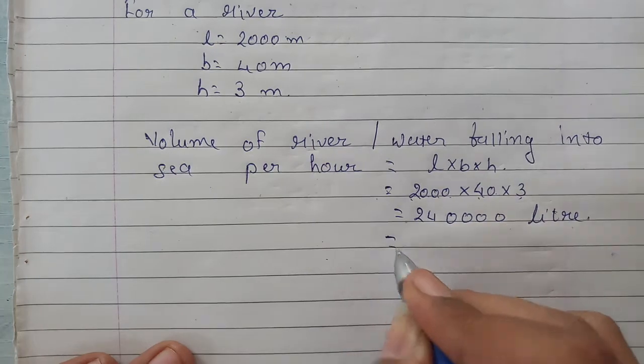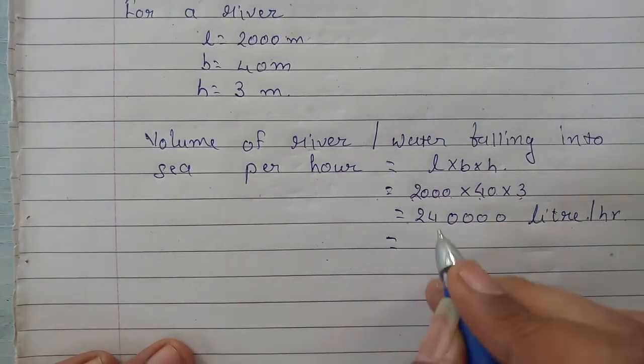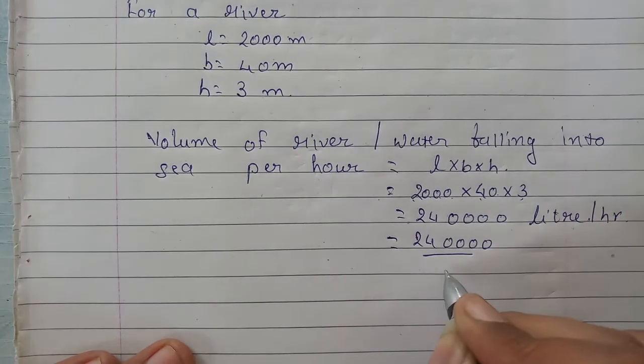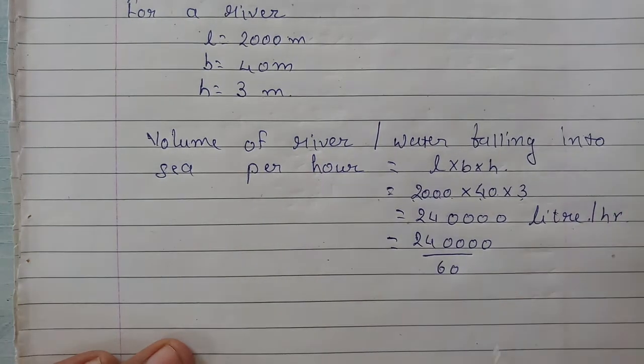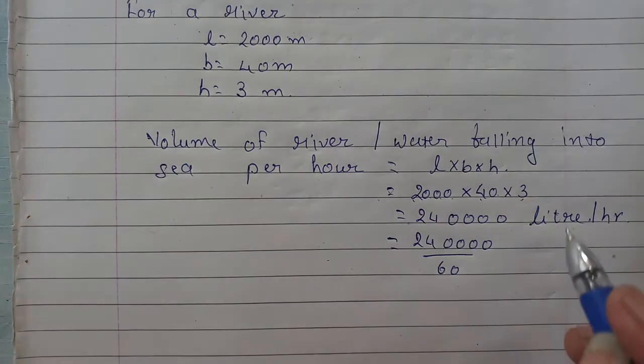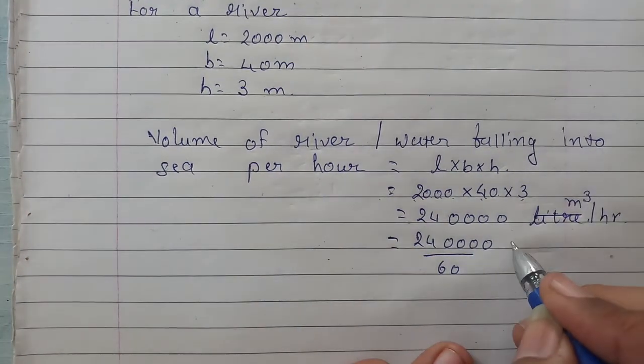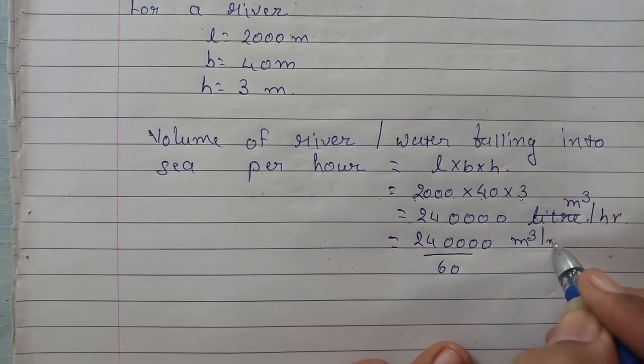So for per minute, we divide this by 60. So that is 240,000 divided by 60. This will not be in liter, this will be in meter cube per hour. So 60 meter cube per minute.